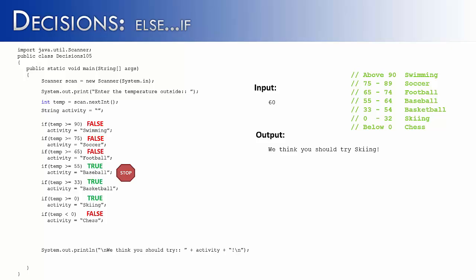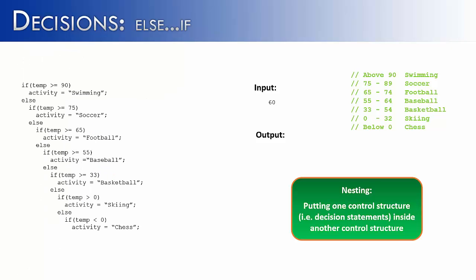And there's a way that we can do this using nested if-else statements. As we look at this code here, what we're doing is we're nesting an if-else statement inside of another if-else statement, inside of another if-else statement, inside of another if-else statement, so on and so forth. And the idea of nesting is simply putting one control structure inside of another.